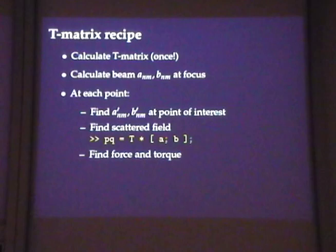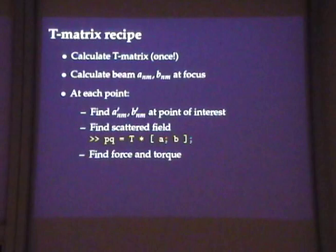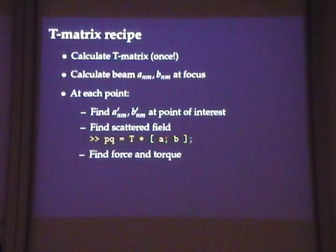What goes into this? For a given particle we need to calculate the T-matrix — for some particles this is very easy, for others it's the single most challenging part of the task. We need to calculate the beam shape coefficients, the multipole amplitudes for the beam. We adopted a very simple, directly numerical method that fits well with the rest of our code and makes it easy to deal with very generalised beams, including beams we don't have analytical expressions for. We have used this with experimentally measured fields as input.